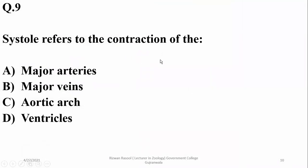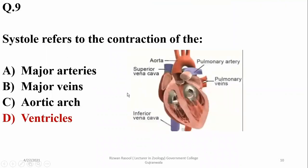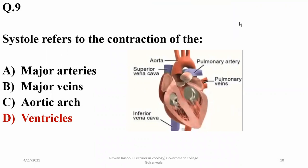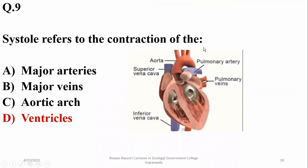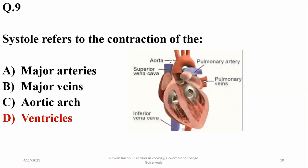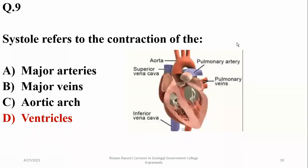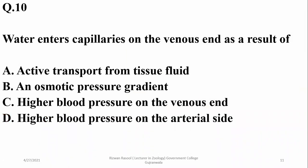Question number nine: systole refers to the contraction of the atrium — there may be atrial systole or ventricular systole. But out of the given options, ventricles is the right option, as systolic blood pressure or systole is mainly referred to the ventricles, where the chambers of the heart contract.